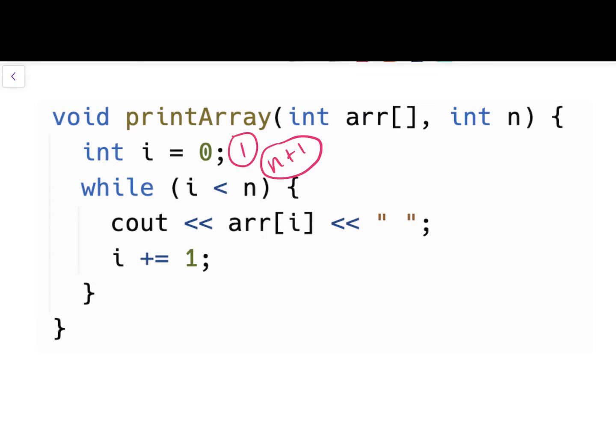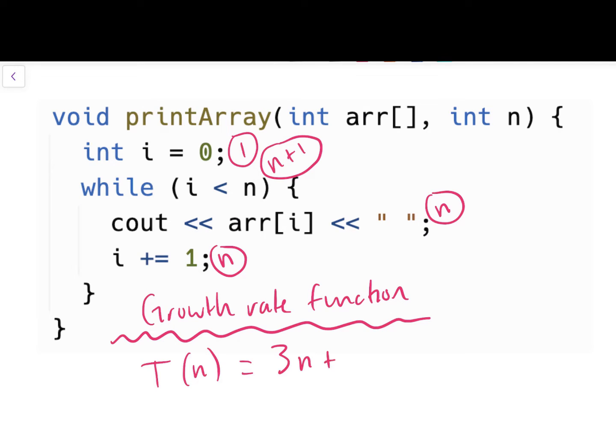In the body of the while loop, we have a cout statement. This cout statement will execute n times. Then we have our progress towards our Boolean condition being false: i plus assign one. Because it's in the body of our while loop, i plus assign one will execute n times. So now we sum up all of our counts to get what's called a growth rate function.